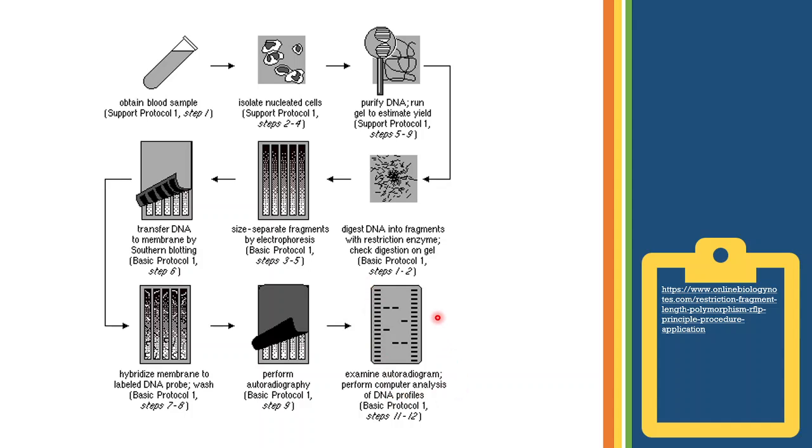The two ladders on the border are the standards that are run along with the unknown sample. These fragments are of known length and molecular weight. This enables us to compare the bands obtained with those of the ladders. And the bands that run the farthest are the smallest or the lightest and those that lag behind are heavier.